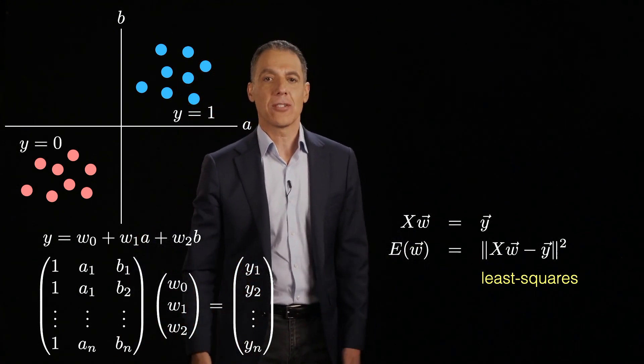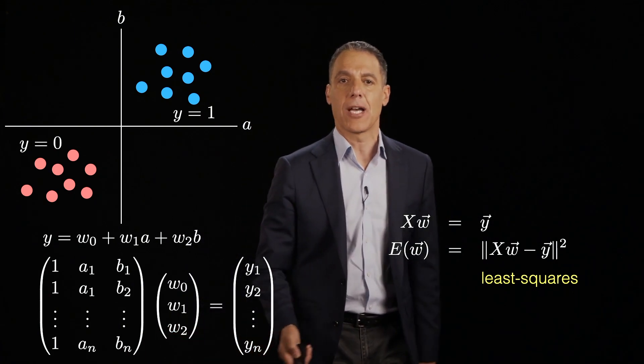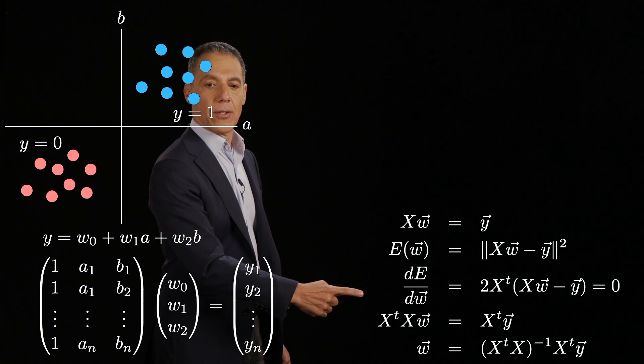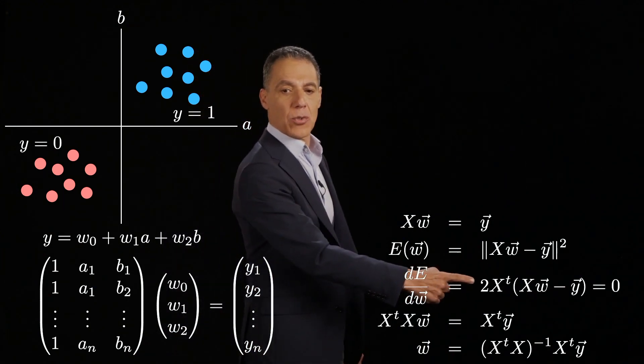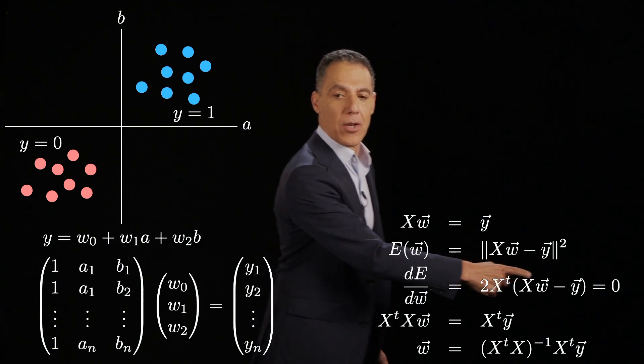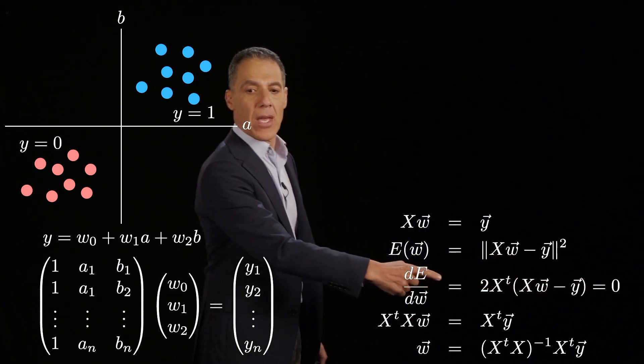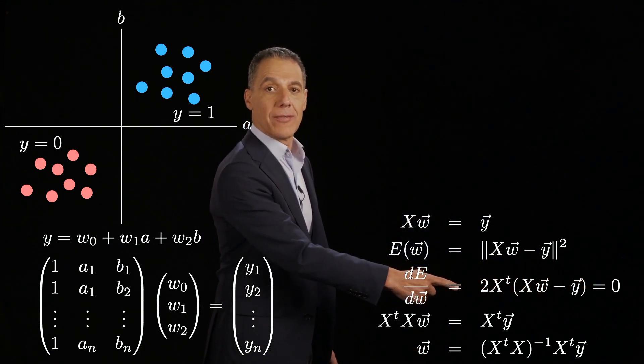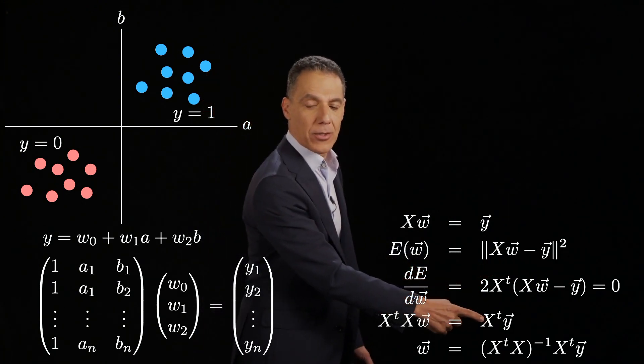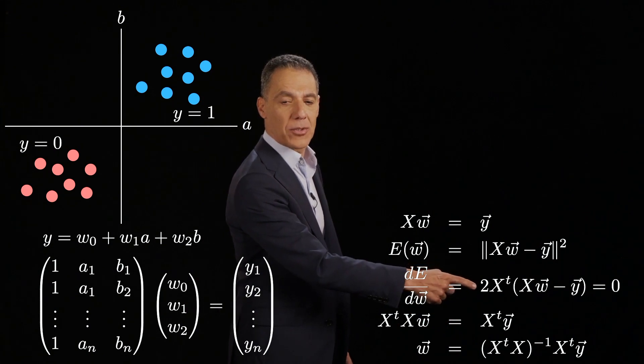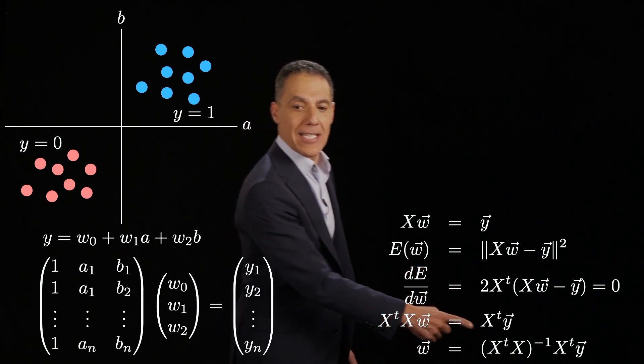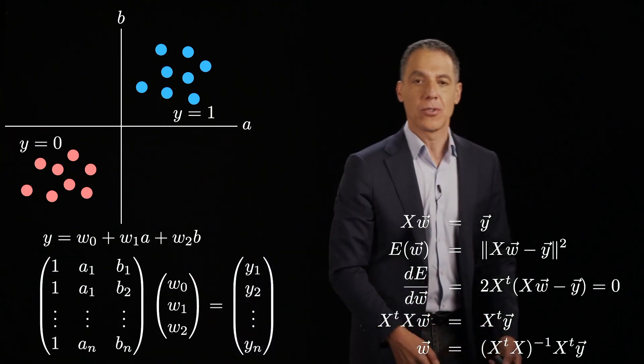And now we're going to minimize. How? Differentiate, set equal to 0 and solve. We know how to do this. We've done this a couple of times now. So let's go ahead and do it. So I'm going to differentiate my error function. That's going to give me 2 X transpose XW minus Y. W, of course, being the unknown. Set that equal to 0. 2 goes away because we can divide by 2. I've got X transpose XW is equal to X transpose Y multiplying through by X transpose. And then, of course, W is just X transpose X inverse times X transpose Y.